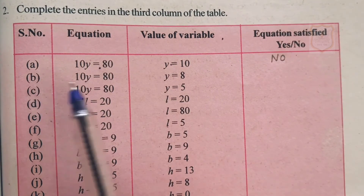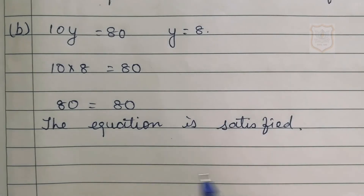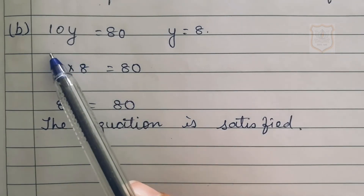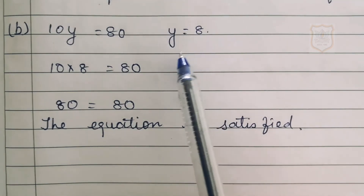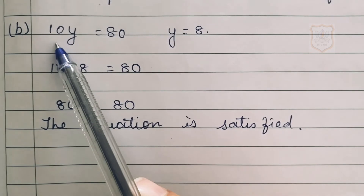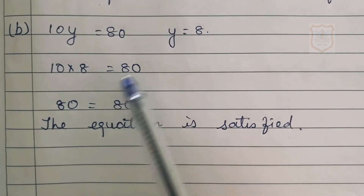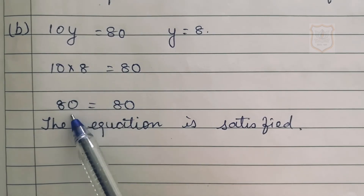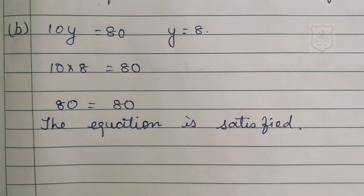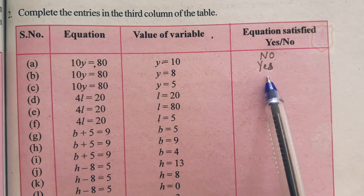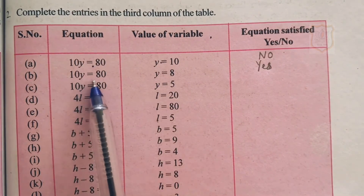Part B of question number 2: 10y equals 80, where the value of variable y is 8. We substitute 8 in place of y, so 10 multiplied by 8 equals 80. 10 times 8 is 80, therefore 80 equals 80. The equation is satisfied. If the value of the variable y is 8, then the equation 10y equals 80 is satisfied — answer is yes.